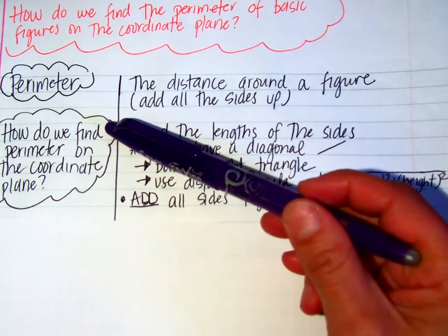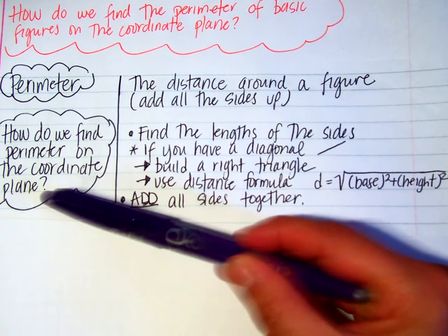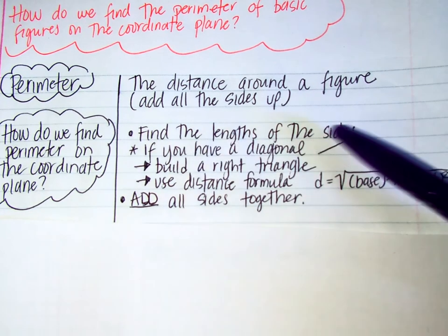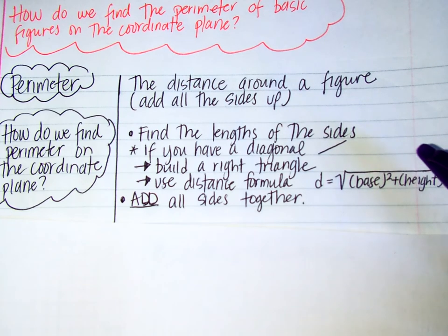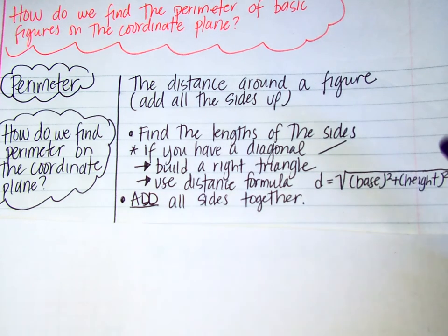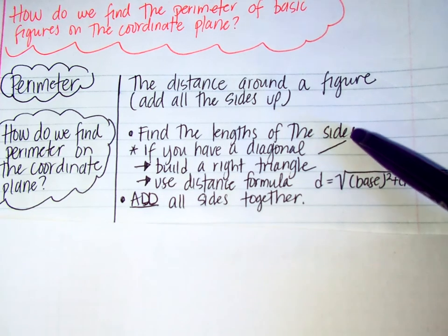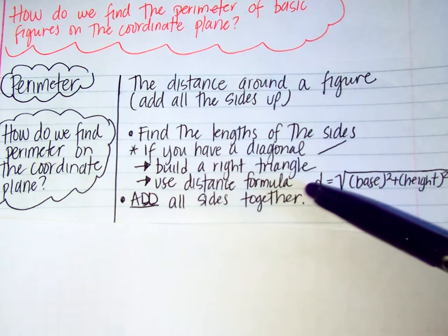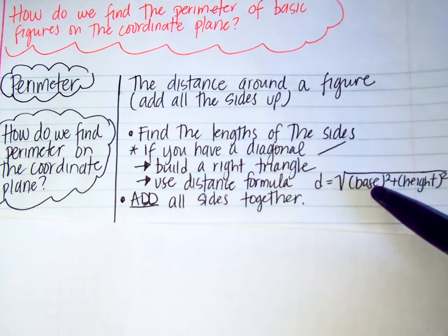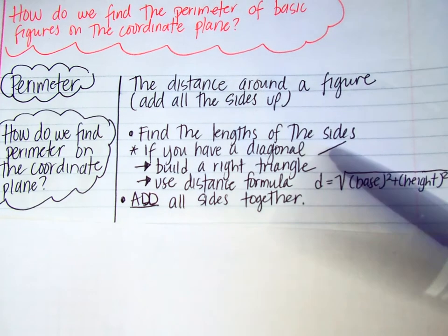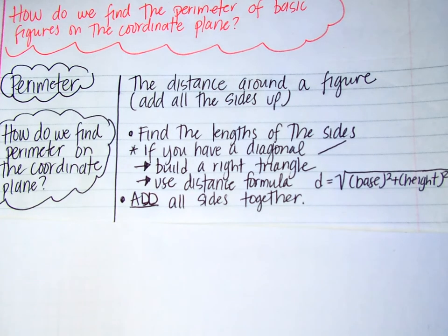Now we have just a few steps on how we find perimeter on the coordinate plane. We're going to be on the grid and looking to see how we can find the perimeter of a shape. First we want to find the lengths of the sides. If we have a diagonal line, however, we can't just count how many boxes or units. We can either write the coordinates and use the distance formula, or we can build that right triangle and use the modified version through the Pythagorean theorem. Once we find all the lengths of all our sides, then we add all our sides together, and don't forget to write the units you're using.